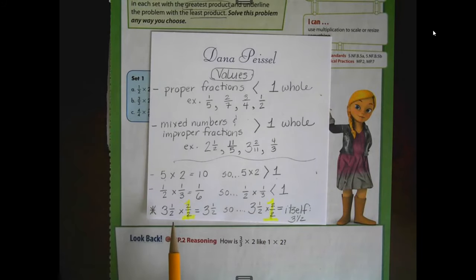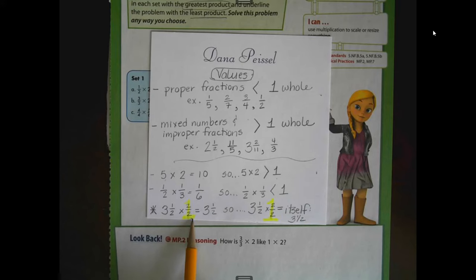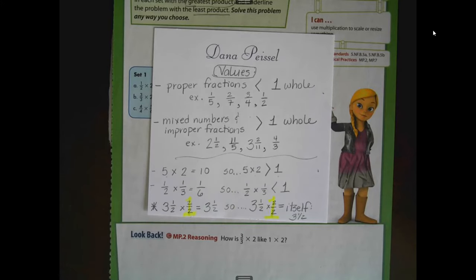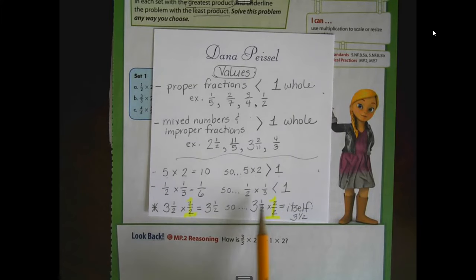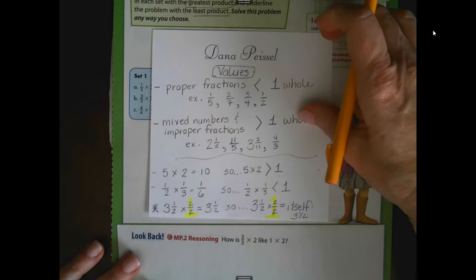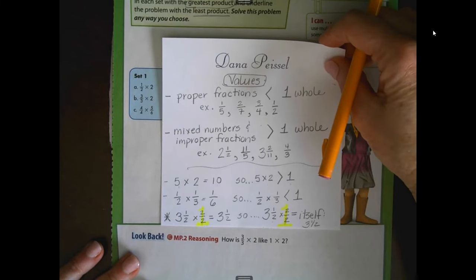If I multiply a number — whether it's a whole number, a mixed number, or a decimal — by a fraction that has a value of one, meaning a fraction where the numerator and denominator are the same number, anytime you multiply a number times a form of one or one itself, then the product is the first factor — it is itself. Three-and-a-half times two-halves is the same as three-and-a-half times one, which equals three-and-a-half. That's because of the multiplicative identity, the property of one. Knowing those foundation concepts is going to help us going into this lesson.